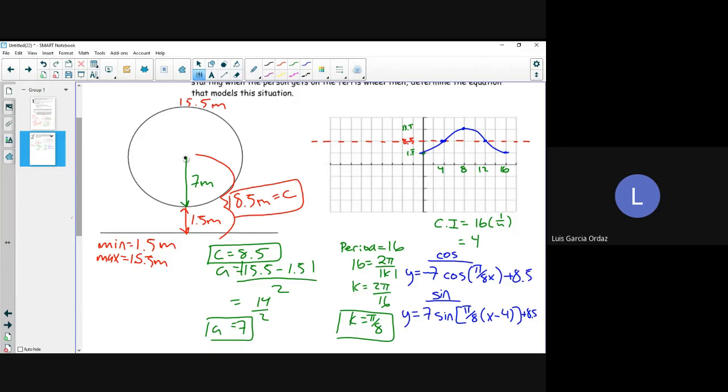And after that, if it doesn't specifically tell you in the question to use the sine or cosine, you can pick either or, or you can write both. I'm not going to give you extra marks if you write both, but just pick one or the other.